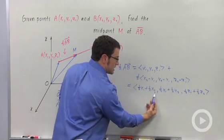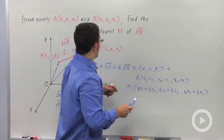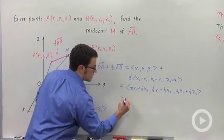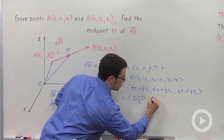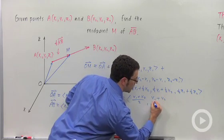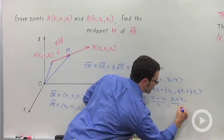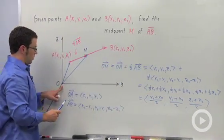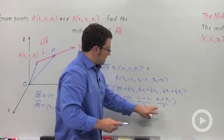Each of these is exactly the average of the x and y components of these two points. So, I can write it as x₁ plus x₂ over 2, y₁ plus y₂ over 2, and z₁ plus z₂ over 2. These are the components of vector OM, which goes from the origin to point M. And therefore, the coordinates of point M are these.